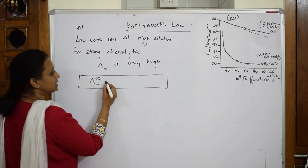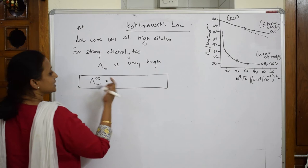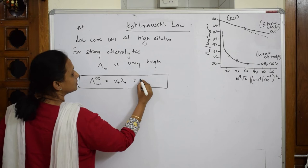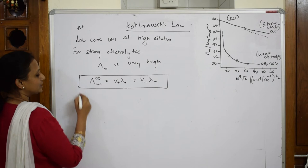So what did Kohlrausch say? At infinite dilution, the molar conductivity can be expressed as the sum of the individual cation and its molar conductivity (λm⁺) plus the individual anion and its molar conductivity (λm⁻). This is Kohlrausch's Law.